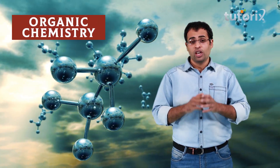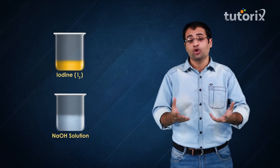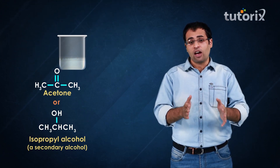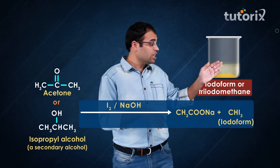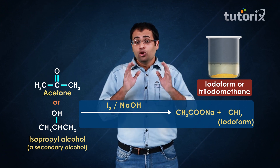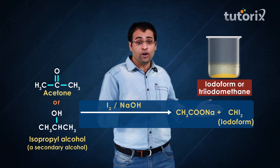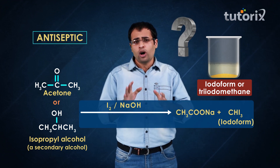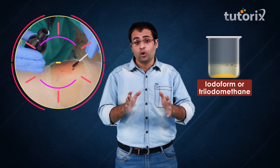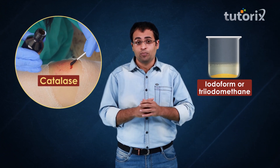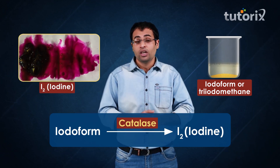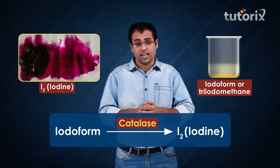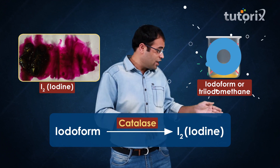I would like to remind you about a basic organic chemistry reaction where iodine and sodium hydroxide are added into a methyl ketone or secondary alcohol having a methyl group in the alpha position. This leads to the formation of a yellow precipitate called triidomethane or iodoform. You will be astonished to know that iodoform has antiseptic properties. At the site of the wound we have an enzyme called catalase, which acts on iodoform to release iodine slowly at the site of the wound. So here too iodine actually acts as the antiseptic, quite indirectly, in the form of iodoform.